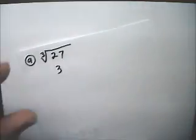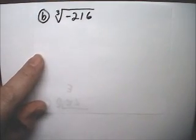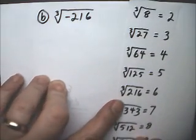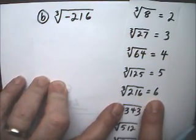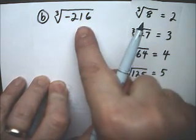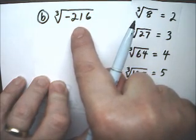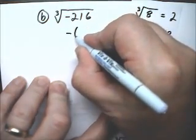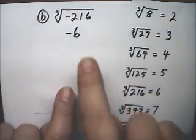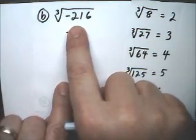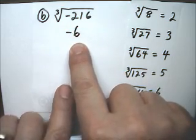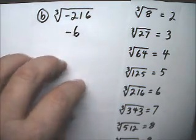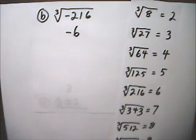Now, part B is the cubed root of negative 216. So, the cubed root of 216 is 6, and we need a number that would multiply times itself three times as negative 216, and that's negative 6. It's a little different than square roots. We didn't have negatives inside because it was impossible. With cubed roots, you have three of them, and a negative times a negative is a positive, and a positive times a negative is a negative. So, that's the answer to B.